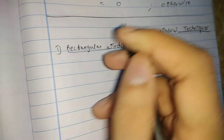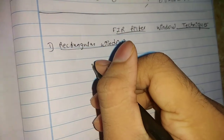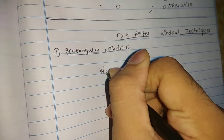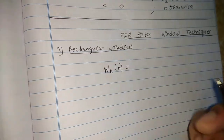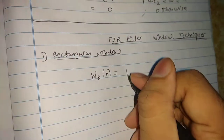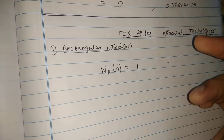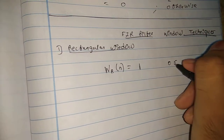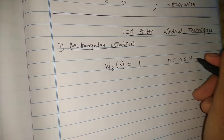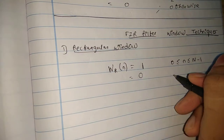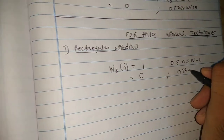In the rectangular window, you have to remember this particular equation. The rectangular window equals 1 for the range 0 ≤ n ≤ N−1, and equals 0 otherwise. This is the equation for the rectangular window.